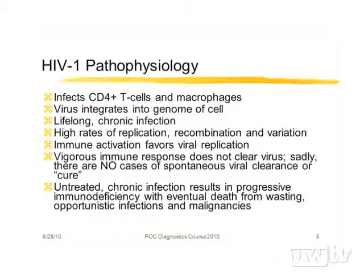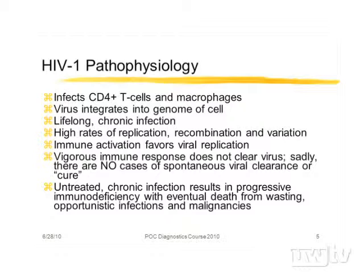Immune activation favors viral replication, so anything that stimulates the immune system is bad for the host and good for the virus. Part of routine health maintenance is to prevent immune activation — fighting infections, using immunizations, trying to avoid situations where there's immune activation. There is a vigorous immune response to the virus, but it doesn't clear it. Unlike any other virus infection I'm aware of, in the retrovirus group there are no cases of spontaneous viral clearance or cure, although there is one supposed medical cure following a bone marrow transplant, but that's an aberration.